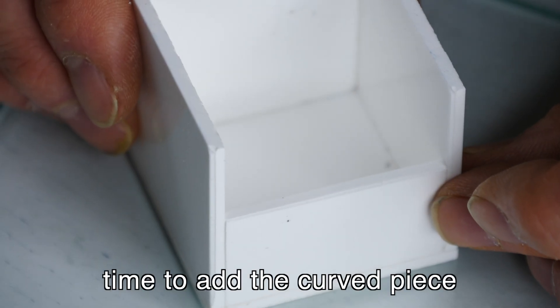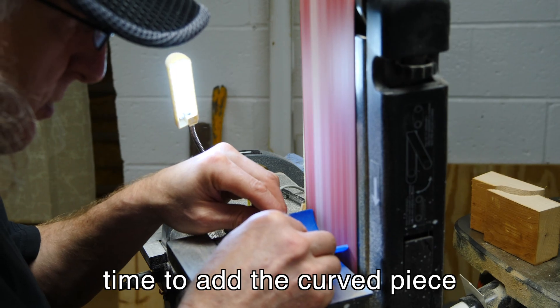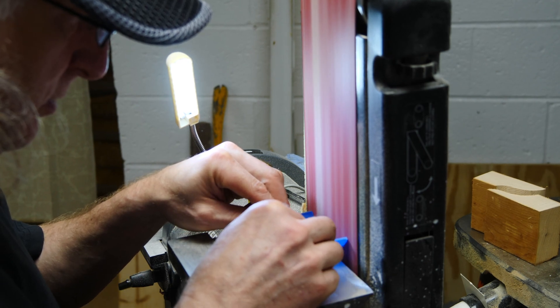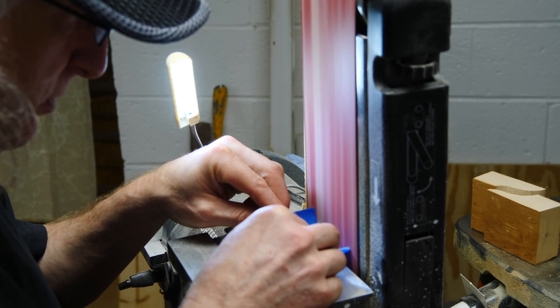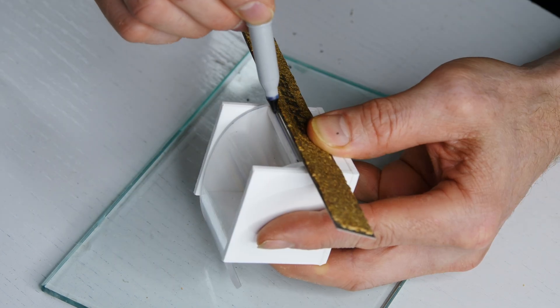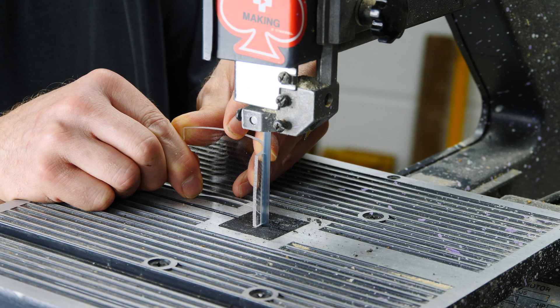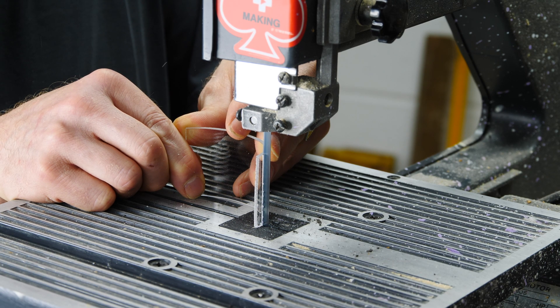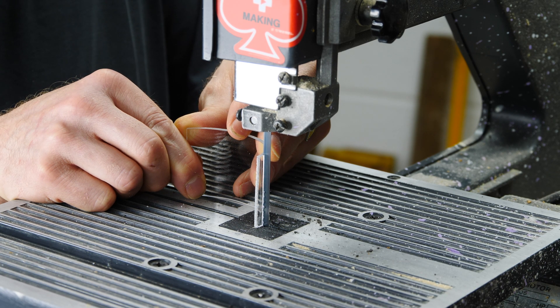So next I'm just sanding the piece of drape formed clear acrylic that we made previously so that it fits inside the two sides of the cube, and we'll cut this off so that we can adhere it to the cube that we just built.